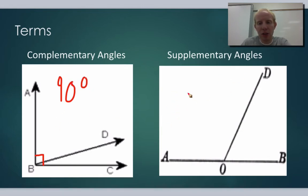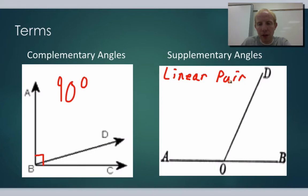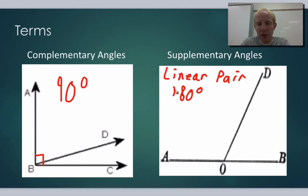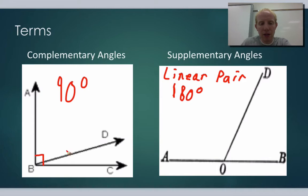We also have supplementary angles, or what we sometimes call a linear pair, because they share a line. A linear pair is two angles that are side by side and they're supplementary, meaning they are equal to 180 degrees when you add them together. Because a straight line is basically 180 degrees. So two angles together equal 90 degrees if they share a right angle, and 180 degrees if they share a line or are a linear pair.